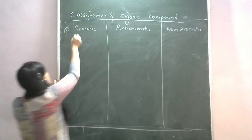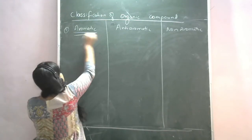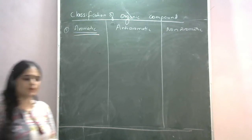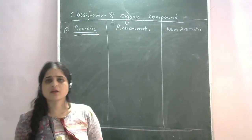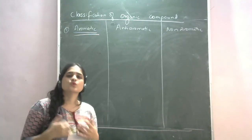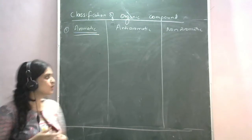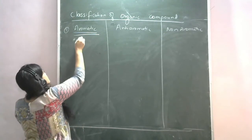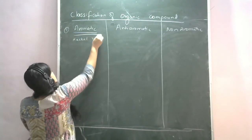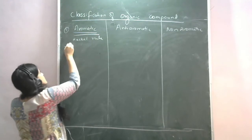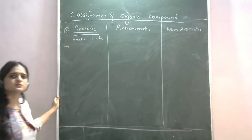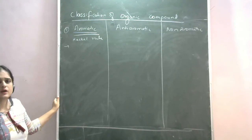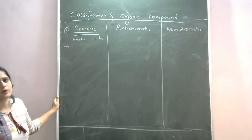Now, you can judge aromatic compounds like this. If we want to identify aromatic compounds, then we have to follow Huckel's rule. According to Huckel's rule, those compounds which follow particular conditions can be called aromatic compounds.